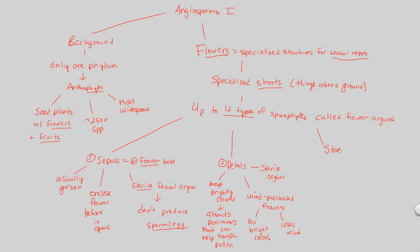The third sporophyll is the stamen, which is the male part of the flower because this is where we have the production of microspores. The stamen produces microspores, and whenever we see microspores, that refers to the male gametes. These microspores eventually develop into the male gametophyte, which in this case is the pollen grain. The pollen grain contains those two important cells. The stamen is directly involved in sexual reproduction, directly aiding in the specialized function of flowers for sexual reproduction.